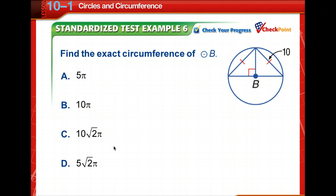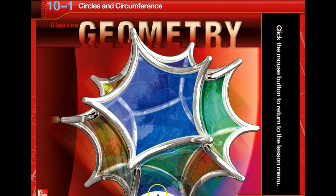Time for you to check your progress. Pause the video, work this problem out, then come back and check your answer. The answer is 10 square root of 2 times pi. We have x² plus x² equals 10², so 2x² equals 100, meaning x² equals 50. The square root of 50 is the square root of 25 times 2, so we pull out 5: x equals 5 square root of 2. The circumference equals 2 times pi times 5 square root of 2 — that is 10 square root of 2 pi. Very good. You are ready to begin your assignment.